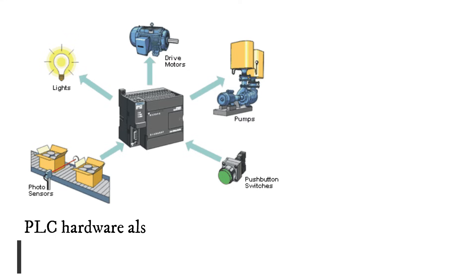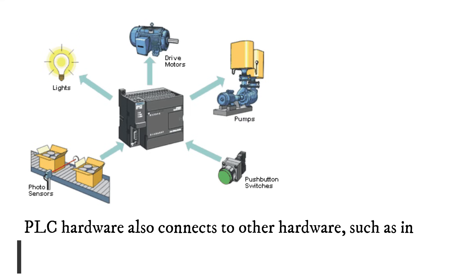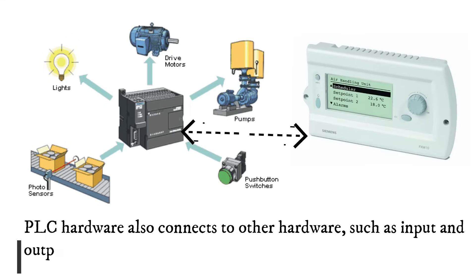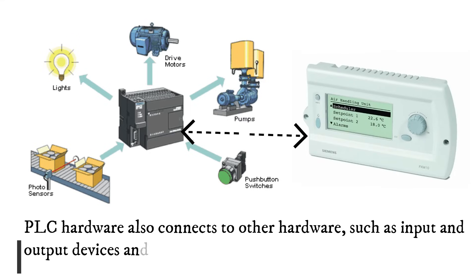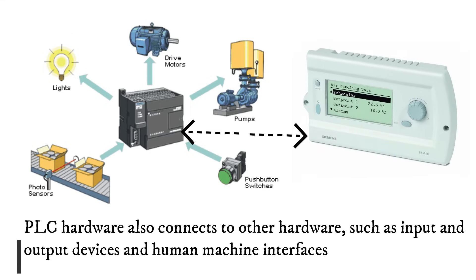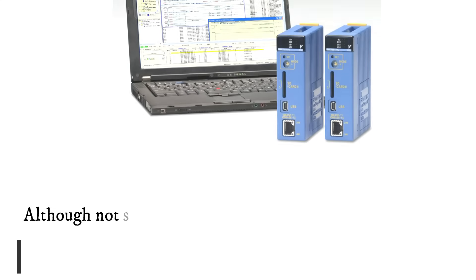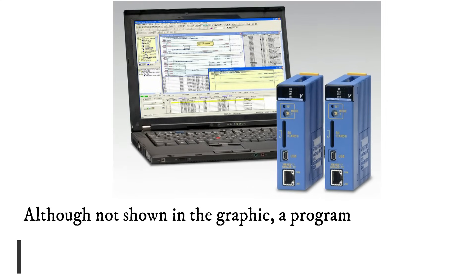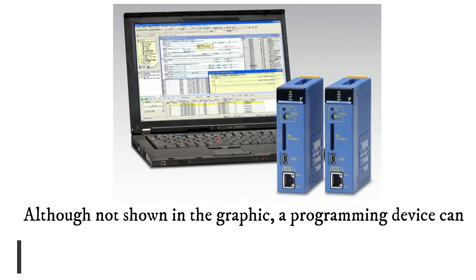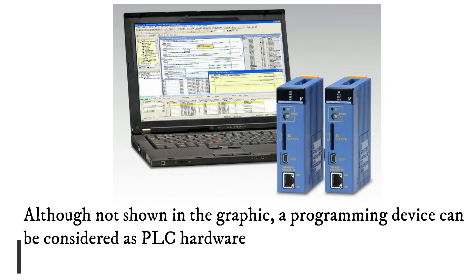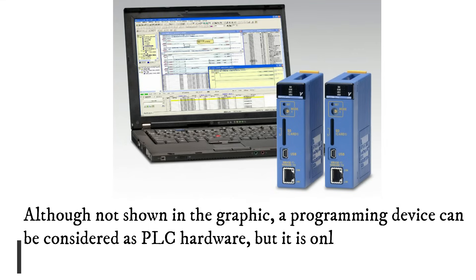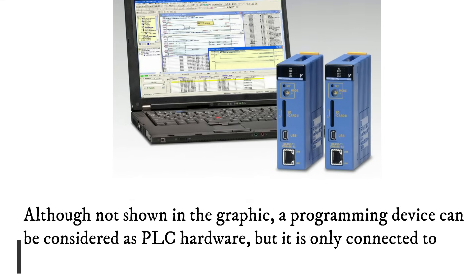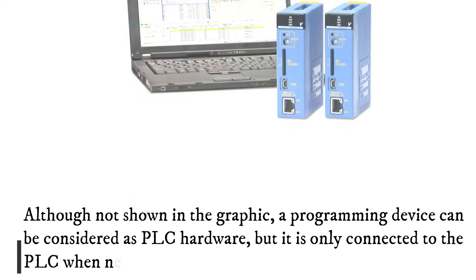PLC Hardware also connects to other hardware, such as input and output devices and human machine interfaces. Although not shown in the graphic, a programming device can be considered as PLC Hardware, but it is only connected to the PLC when needed.